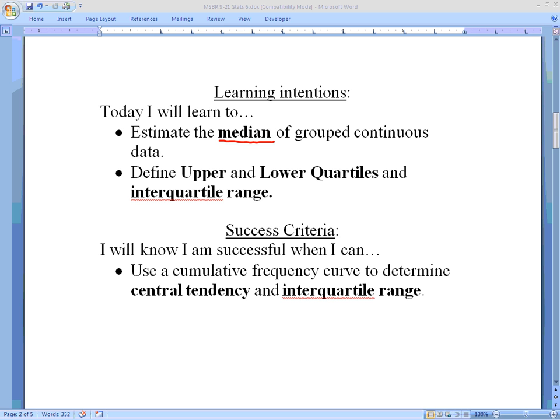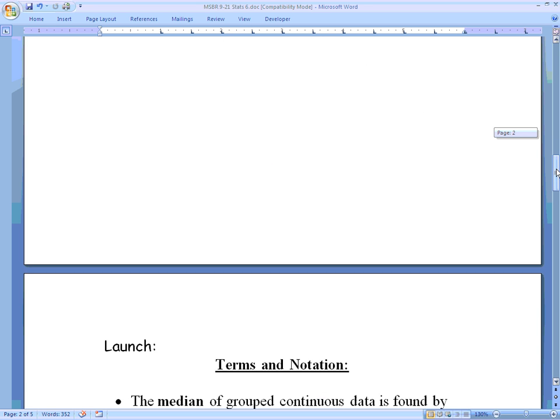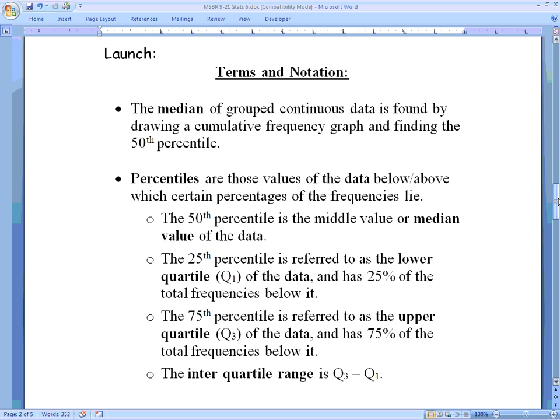We're also going to look at upper and lower quartiles, define those terms, as well as interquartile range. We'll begin with some terms and notation. We start with the median. The key to finding median for grouped continuous data is found using something called a cumulative frequency graph.